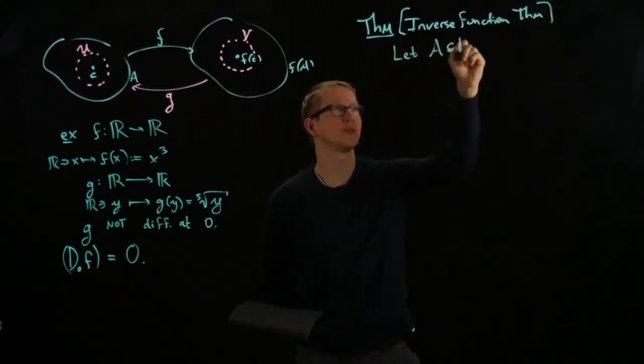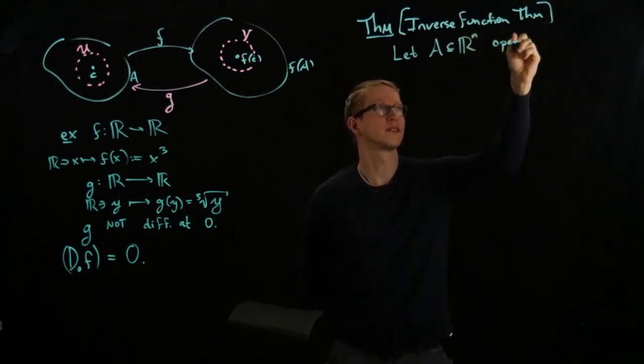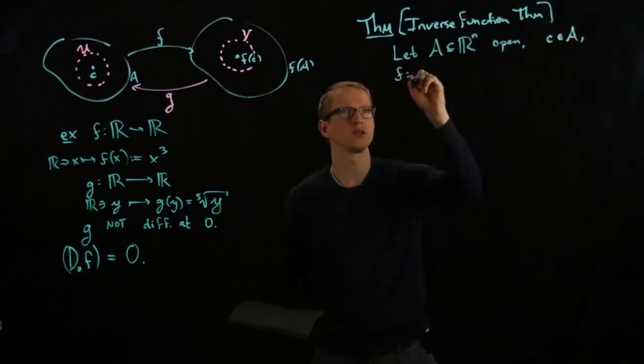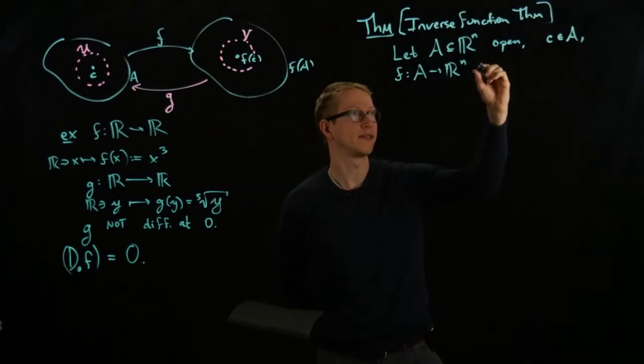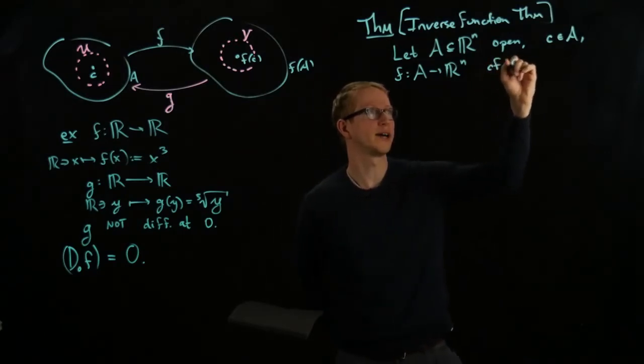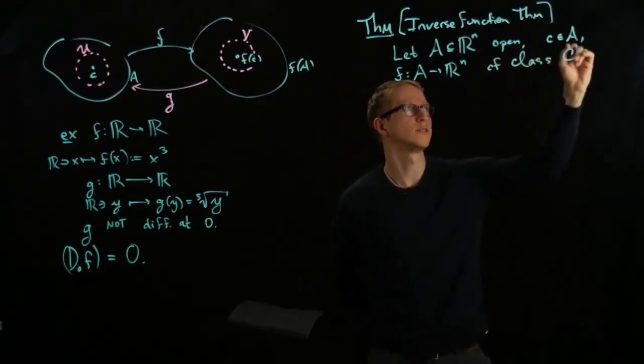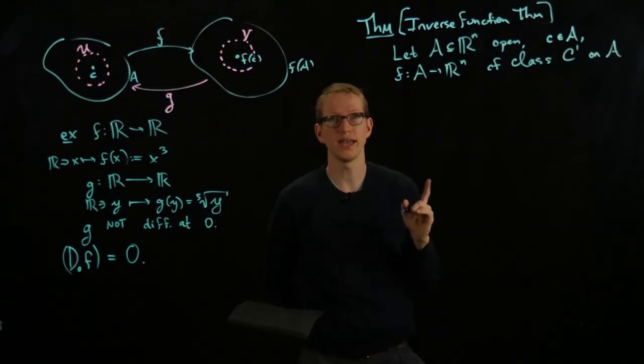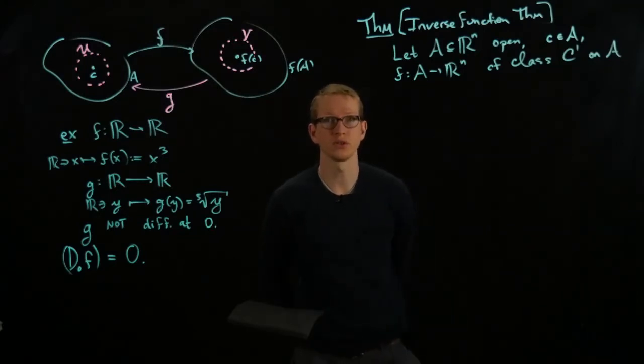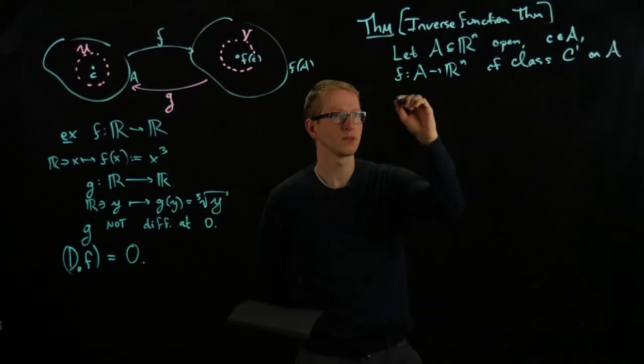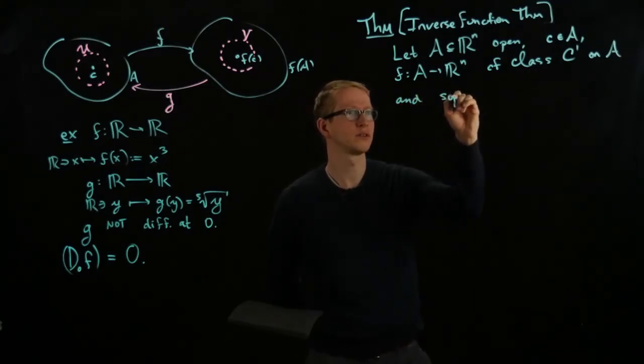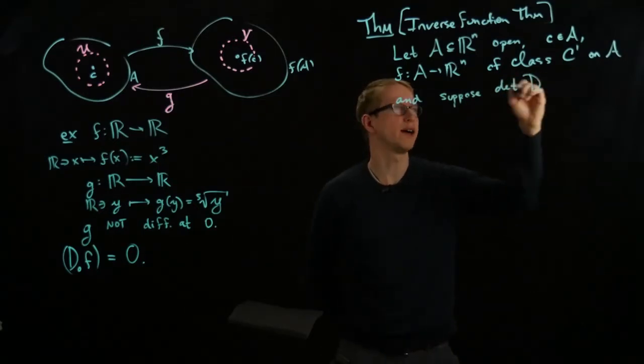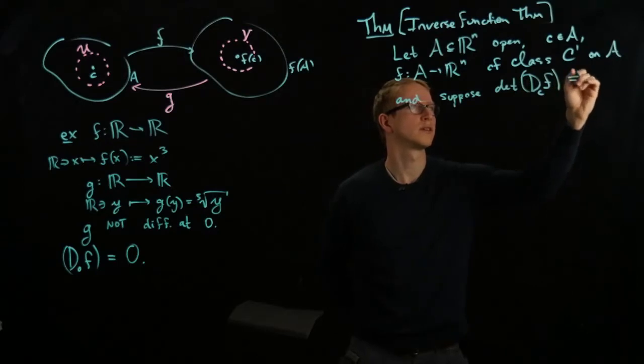So let A be an open subset of Rn. Let c be a point in A. Let f be a function from A to Rn. And let's say that f is actually of class c1 on A. So remember what that means. That means it's differentiable at all points and its partial derivatives are also continuous on A. And finally, suppose that the determinant of the differential of f at the point c is non-zero.